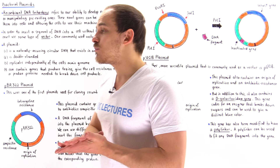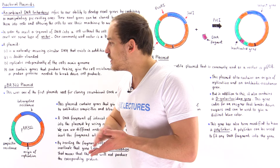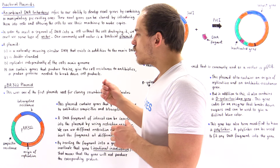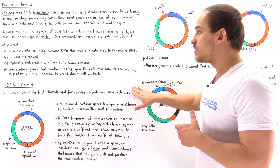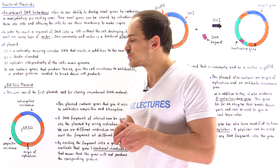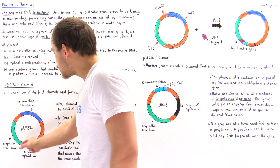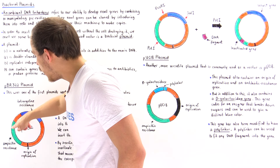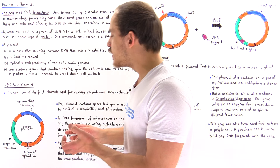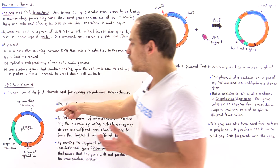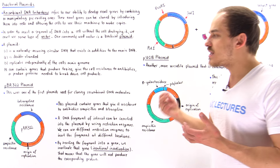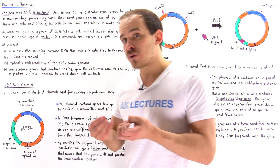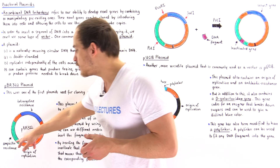In biochemistry, there are two types of plasmids we commonly use: PBR322 and PUC18. PBR322 was one of the first plasmids used to clone recombinant DNA molecules. It is a circular double-stranded DNA molecule. The orange section describes non-coding genes, the blue section codes for a protein that gives the cell resistance to the antibiotic tetracycline, and the green section codes for a protein that gives the cell resistance to the antibiotic ampicillin.